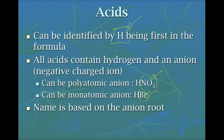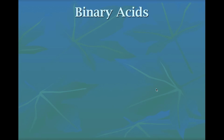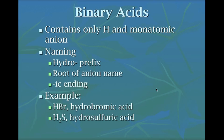There are two types of acids. The first is a binary acid, which contains only hydrogen and a monatomic anion — hydrogen plus one other thing, because 'bi' means two. When we name a binary acid, we put the prefix 'hydro' at the beginning, take the root of the anion's name, add '-ic' to the end, and then 'acid.'